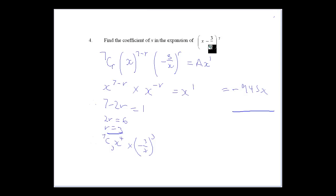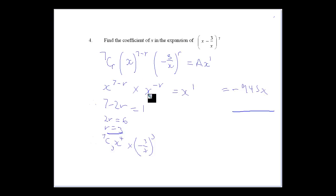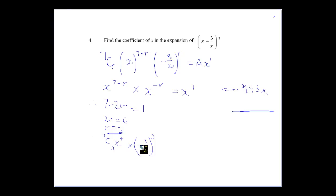Finding the coefficient of x: doing this in a formal way, we have 7Cr times x to the power of (7 minus r) times (minus 3 over x) to the power of r. We're going to get some number times x to the power of 1. Ignoring the numbers, concentrate on the x's: x to the power of (7 minus r) times x to the power of minus r. So 7 minus r minus r equals 1, giving 7 minus 2r equals 1, so 2r equals 6, r equals 3. That gives us 7C3 times x to the power of 4 times (minus 3) to the power of 3 over x cubed, which is minus 945x, with coefficient minus 945.